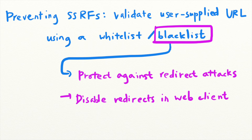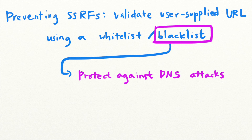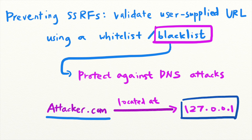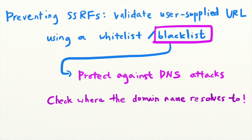Another way attackers bypass blacklist protections is by modifying the DNS records of a domain they control and making it point to an internal address. For example, they can create a DNS A record and make attacker.com resolve to a sensitive internal address. When your server requests attacker.com, it will think the domain is located at the internal address and access that address instead. So when validating domain names, you also need to make sure that user-provided domains do not resolve to an internal IP address.